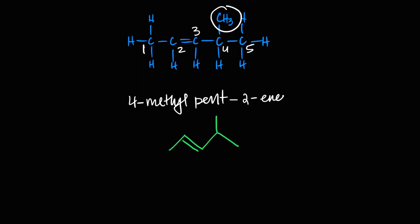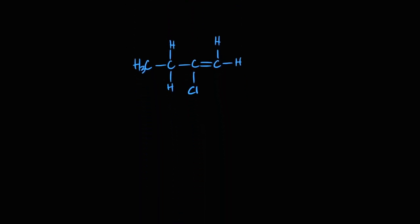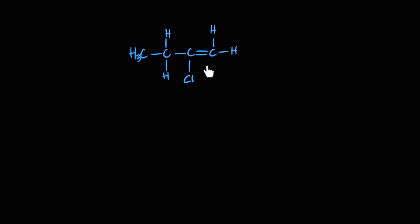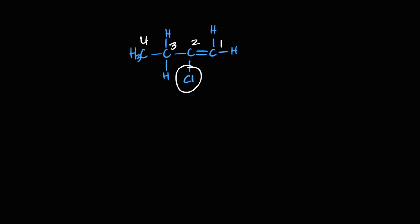This example also contains a halogen. The longest carbon chain with the double bond has four carbons. If I start from the left, the double bond is on the third bond; from the right, it's the first. So I number from the right: carbon one, two, three, four. It's a four-carbon chain — 'but-1-ene' — and chlorine is on carbon number two, so it's 2-chlorobut-1-ene. The skeletal formula shows four carbons, but-1-ene, with chloro on carbon two.